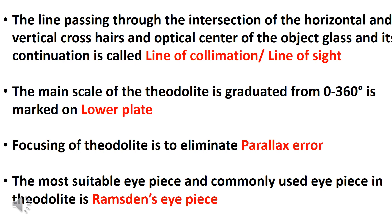The main scale of the theodolite is graduated from 0 to 360 degrees and is marked on the lower plate. Focusing of the theodolite is done to eliminate parallax error.